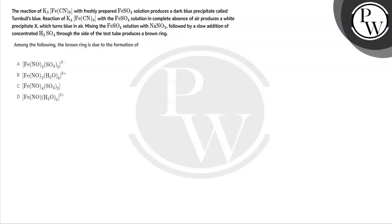Hello, let's read the question. The reaction of K3[Fe(CN)6] with freshly prepared ferrous sulfate solution produces a dark blue precipitate called Turnbull's blue. The reaction of K4[Fe(CN)6] with ferrous sulfate solution in complete absence of air produces a white precipitate.